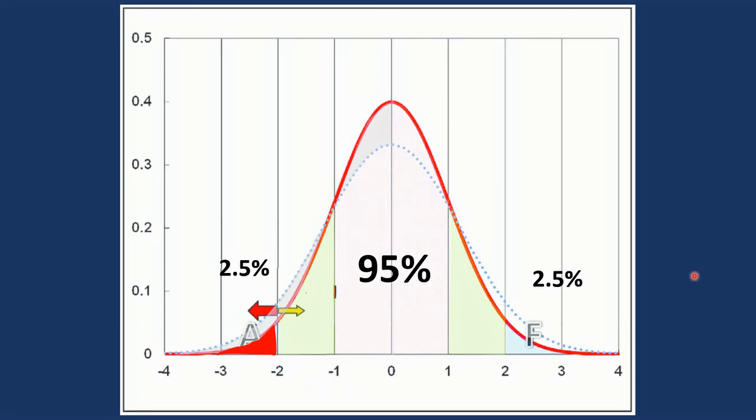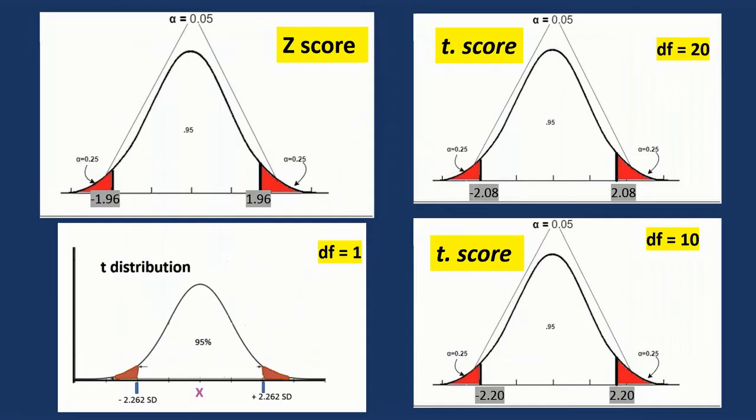But in case of the small sample size, it is starting here. So it is not two, it is more than two on this side and on the other side. Let's see it here. This is the Z score.